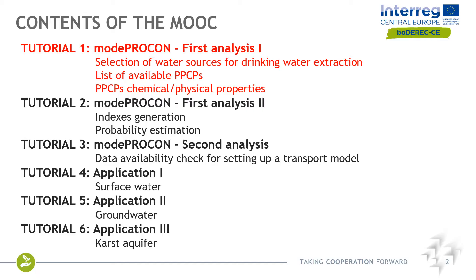We are now ready to start with the first tutorial related to ModProcon. In this first tutorial we are going to describe the first analysis, or part of the first analysis, that we are going to carry on in ModProcon. We will describe how to select the water sources for drinking water extraction, list the available PPCPs, show how to select them in ModProcon and how to edit the list if needed, and provide a brief introduction to the chemical and physical properties of the PPCPs and how they are listed in the table.